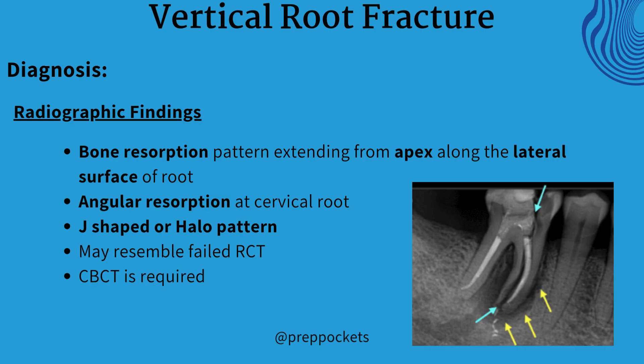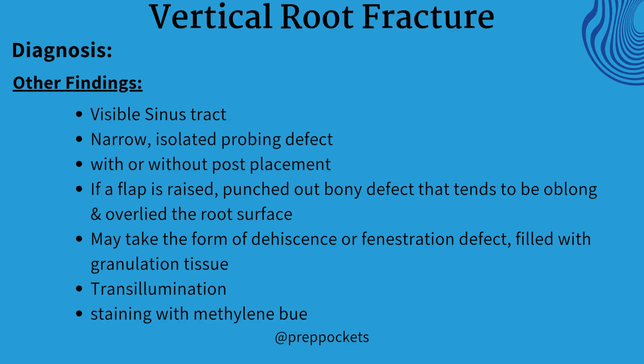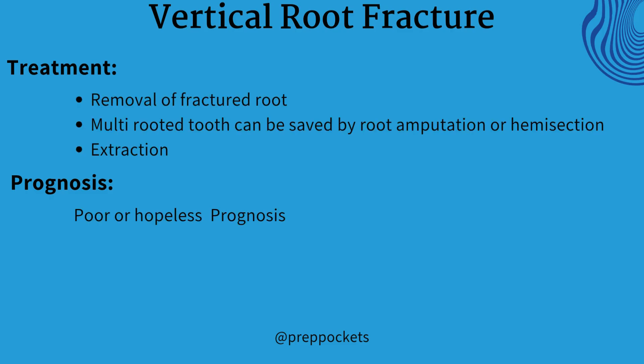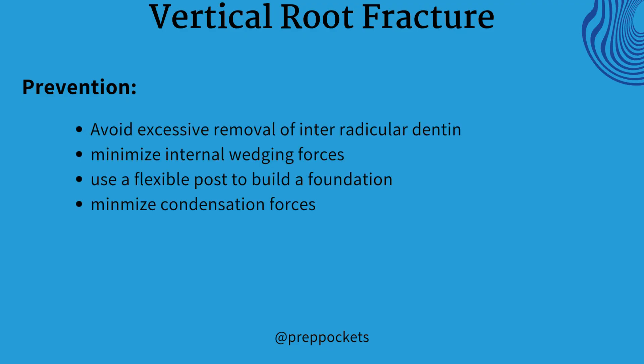There will be marked bone resorption extending from the apex along the lateral surface of the root. With angular resorption at the cervical root, there will be a characteristic J-shaped or halo pattern. CBCT is required for further investigation, but it can also be diagnosed on a periapical x-ray. There may be a visible sinus tract and a narrow, isolated probing defect. Transillumination and staining with methylene blue can be helpful in diagnosis. Treatment involves extraction of the tooth, as it shows a poor to hopeless prognosis. Prevention includes avoiding excessive removal of intraradicular dentin, minimizing internal wedging forces and condensation forces, and using a flexible post to build a foundation.